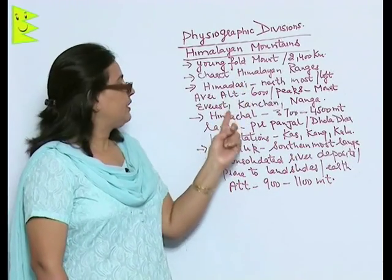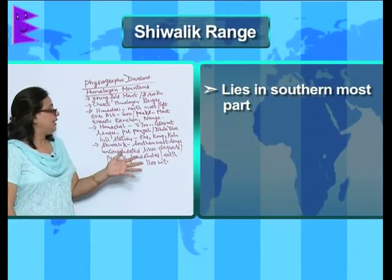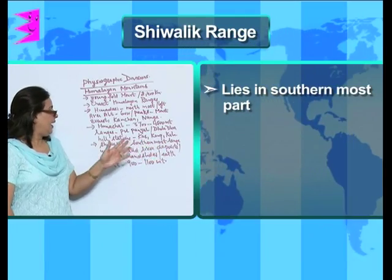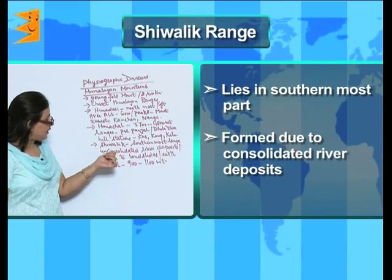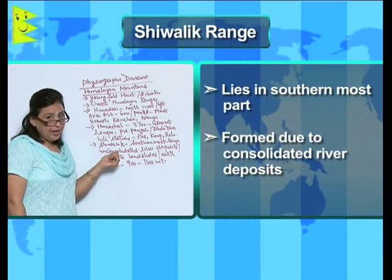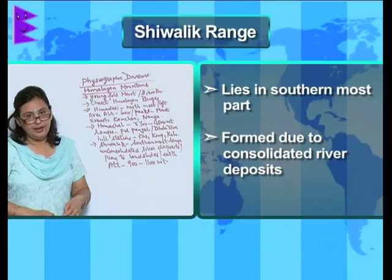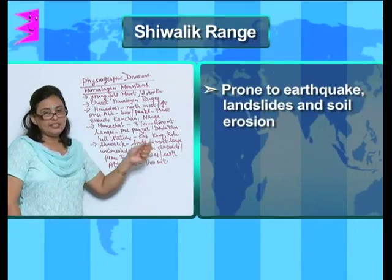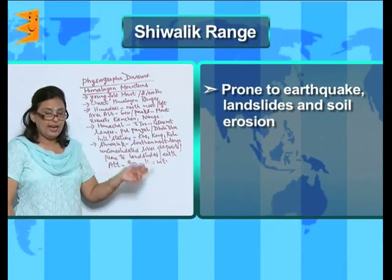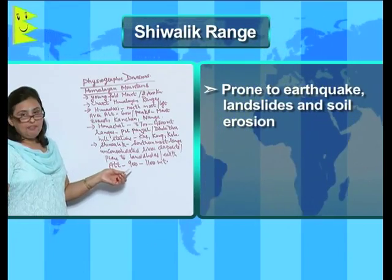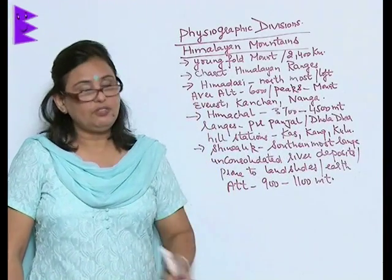The third is the Shivalik range. The Shivalik range lies in the southernmost part and it is made due to unconsolidated river deposits. Whenever the earth is unconsolidated, it becomes prone to landslides, earthquakes, and soil erosion — so this Shivalik range is also prone to landslides, earthquakes, and soil erosion. The average altitude is anything between 900 to 1100 meters.